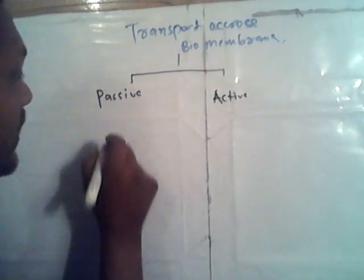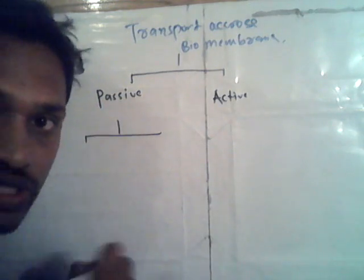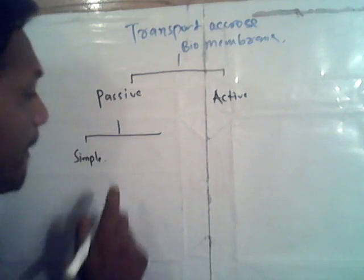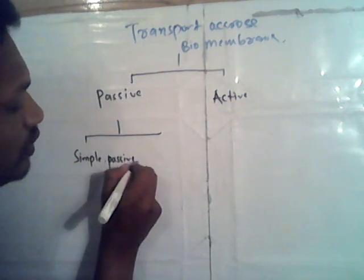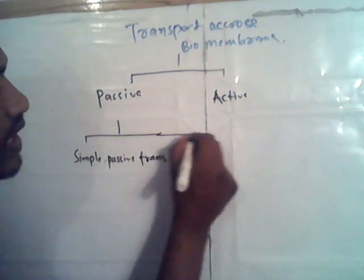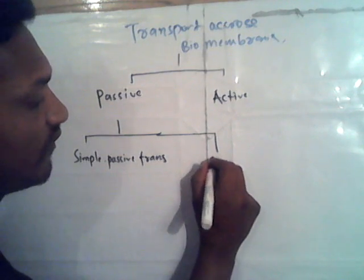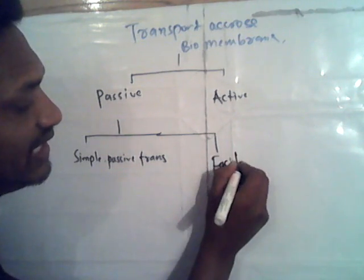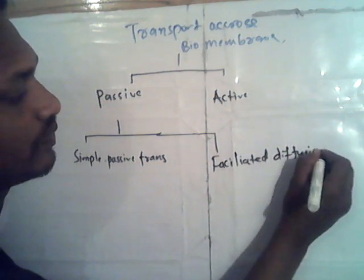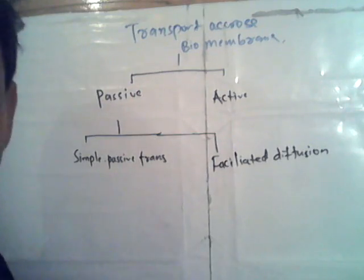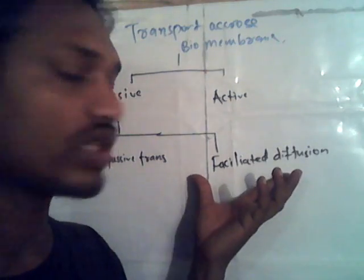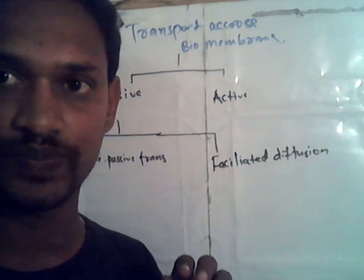Passive transport is again divided into two subtypes: simple passive transport and facilitated diffusion.